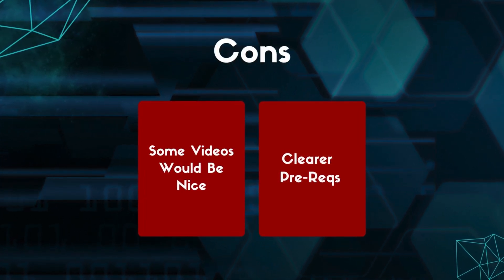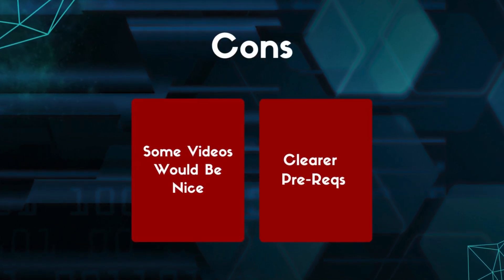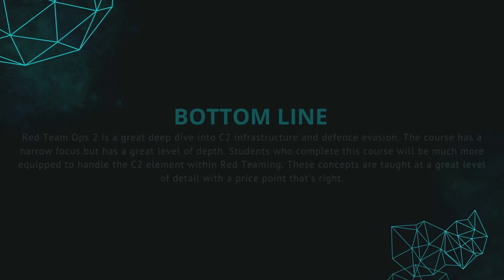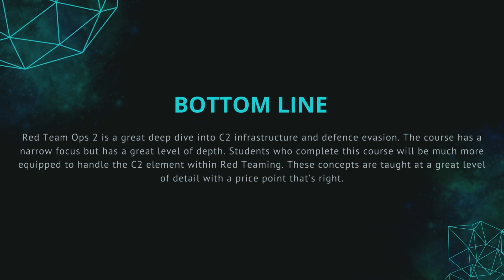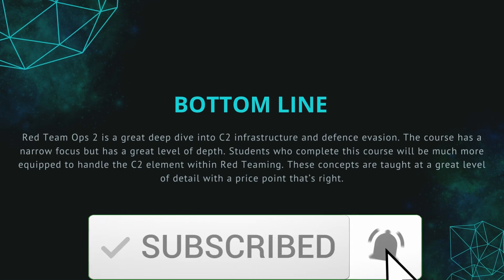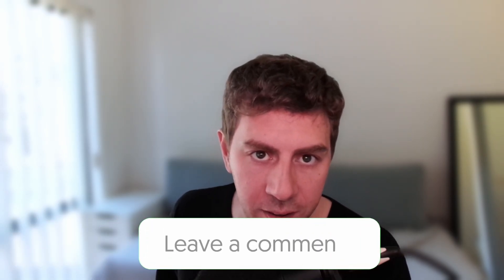Also, I think the prerequisites on the website should be a little bit more clear to give students a better idea of what they need to brush up on before diving in. So onto the bottom line: Red Team Ops 2 is a great deep dive into C2 infrastructure and defense evasion. This course has a narrow focus but a great level of detail, and students who complete it will be much more equipped to handle the C2 element of red teaming. These concepts are taught at a great level of detail at a price that is desperately needed in this space. If you enjoyed this video, be sure to leave it a like, let me know what you think in the comments, and subscribe for more videos just like this.